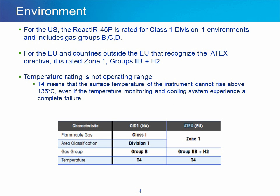In the U.S., the Reactor Air 45P is rated for Class 1, Division 1 environments, and that includes gas groups B, C, and D. For the European Union and countries outside the EU that recognize the ATEX directive, it is rated Zone 1, gas groups 2B plus hydrogen. The temperature rating is T4, meaning the surface temperature of the instrument cannot rise above 135 degrees Celsius under any circumstance, even if the temperature monitoring and cooling system experience a complete failure.